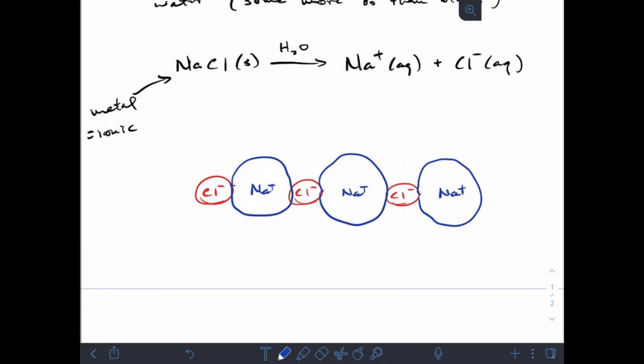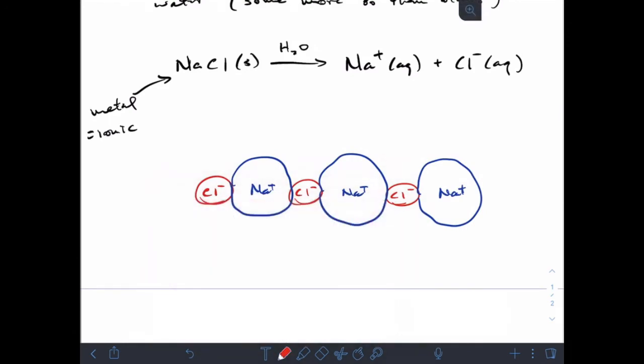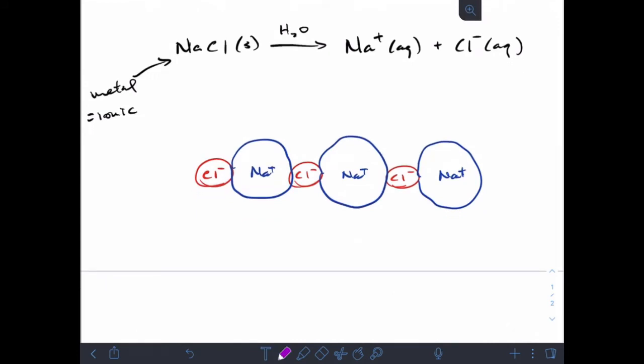So what's going to happen is our water molecule, when we put this solid in water, I've got a water molecule and its positive side is attracted to that negative chlorine, and then it pulls it off.